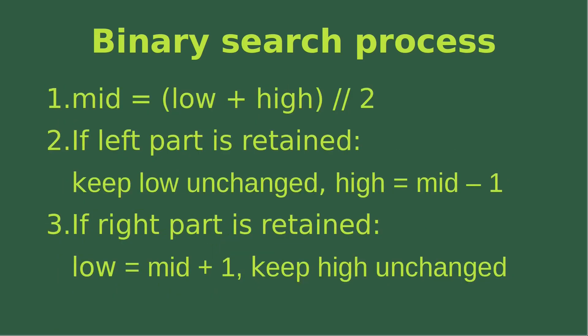Now let me show you the way to calculate the three indices. The mid-index is equal to the low index plus the high index, and then I take the sum and do the integer division by two. That's why I have two slashes to indicate the integer division.